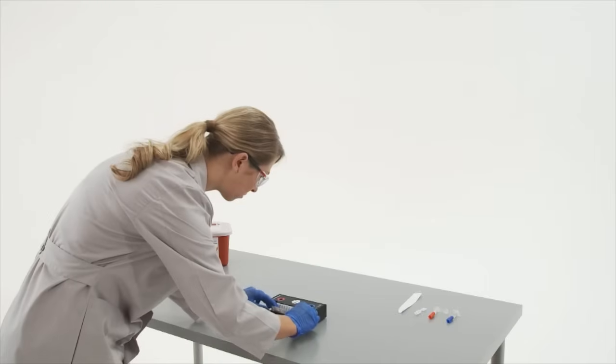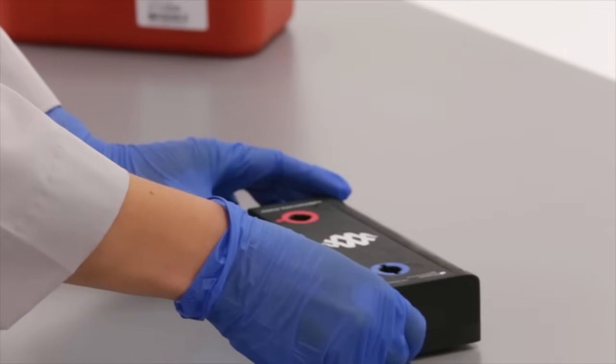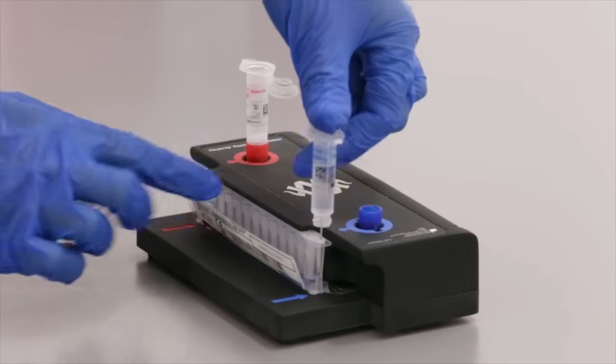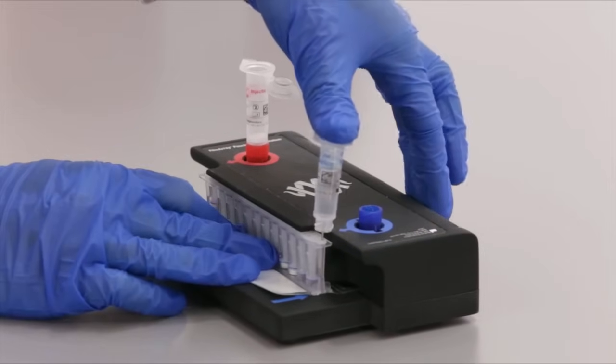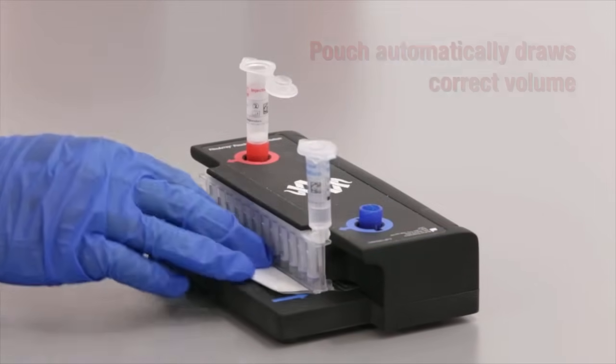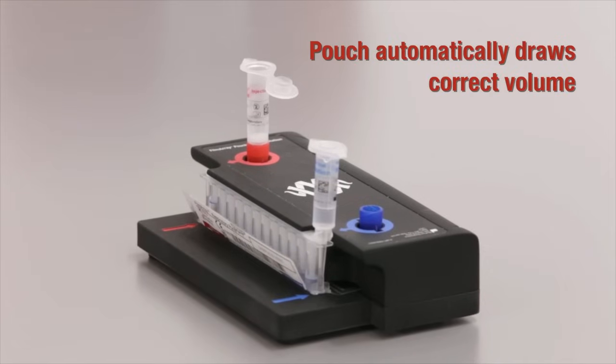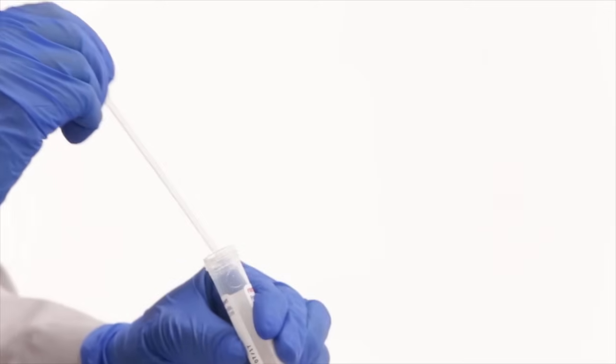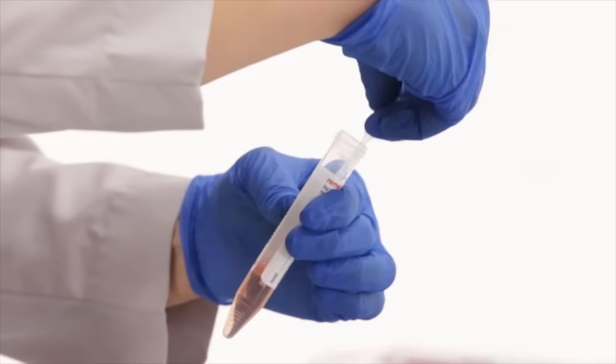To begin a film array run, the pouch is first placed into the loading block. Then, hydration solution is injected into the pouch through the blue inlet port on the right. The vacuum in the film array pouch automatically draws the correct volume, eliminating the need for precise measuring and pipetting.